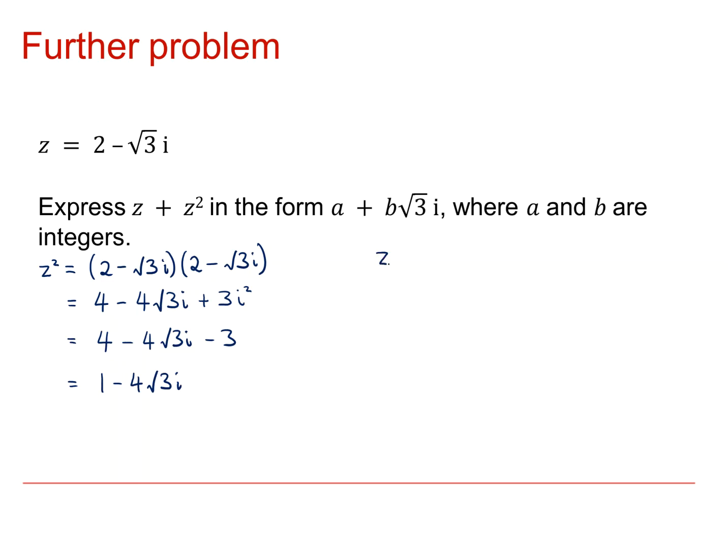Now let's add that on to z. So z plus z squared is equal to 2 minus root 3i plus 1 minus 4 root 3i. Collecting terms, that gives us 3 minus 5 lots of root 3i. And you can see that that's in the correct form that we were asked to give it.